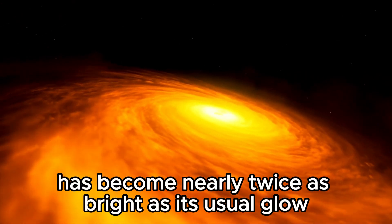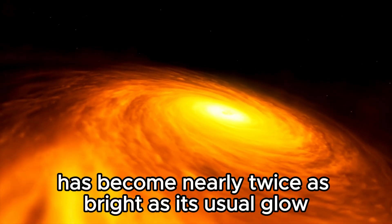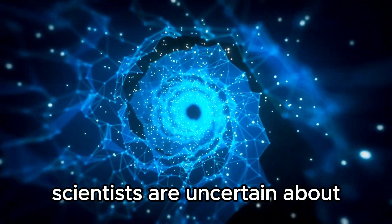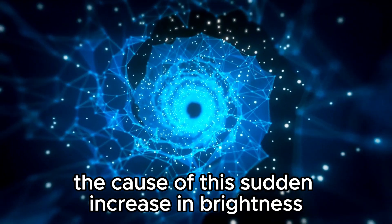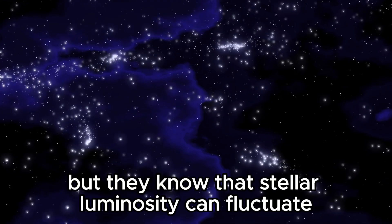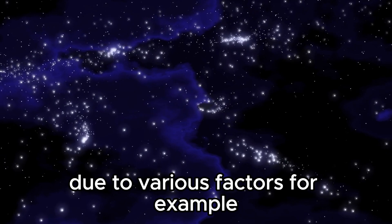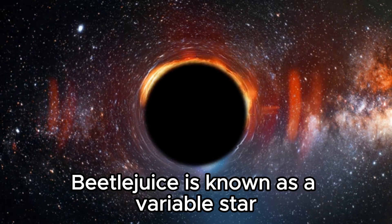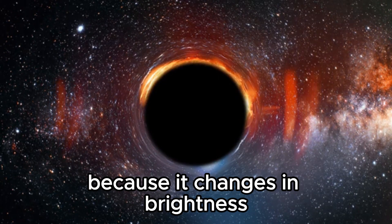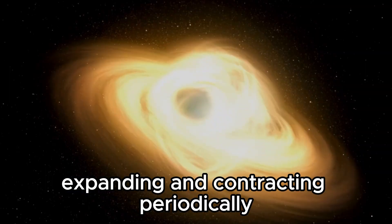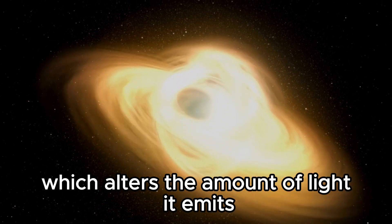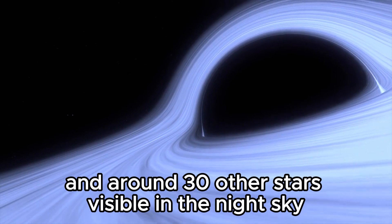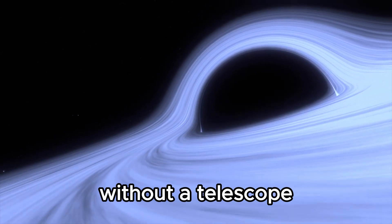Recently, Betelgeuse has become nearly twice as bright as its usual glow. This is surprising because stars typically dim as they age. Scientists are uncertain about the cause of this sudden increase in brightness, but they know that stellar luminosity can fluctuate due to various factors. For example, some stars undergo cycles of bright and dim phases. Betelgeuse is known as a variable star because it changes in brightness, expanding and contracting periodically, which alters the amount of light it emits. This is a common occurrence with many stars, including Aldebaran and around 30 other stars visible in the night sky without a telescope.